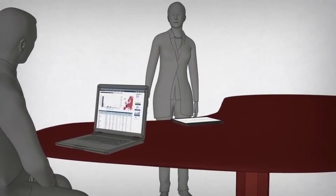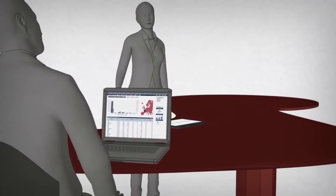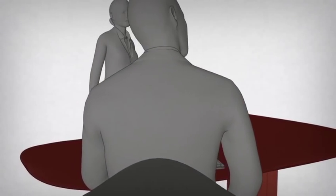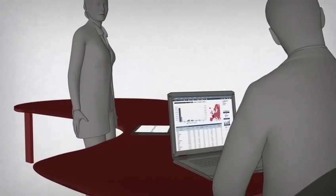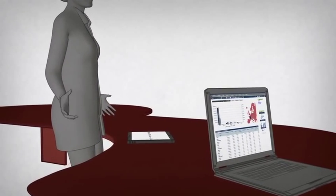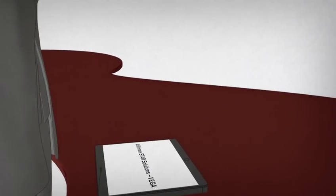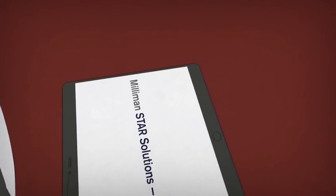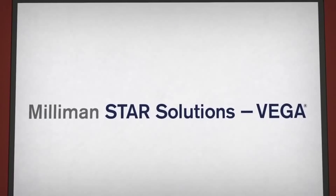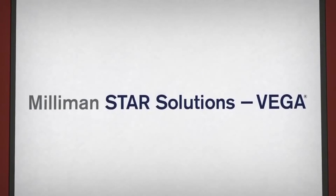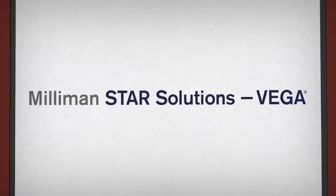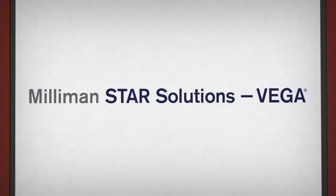We've built a robust, powerful analysis and reporting solution and we made it secure, flexible and easy to implement and use. Milliman Star Solutions Vega is designed for Solvency 2, as well as an overall look at enterprise risk, not only to help you get ahead of the new regulations, but also to help you run your business better.